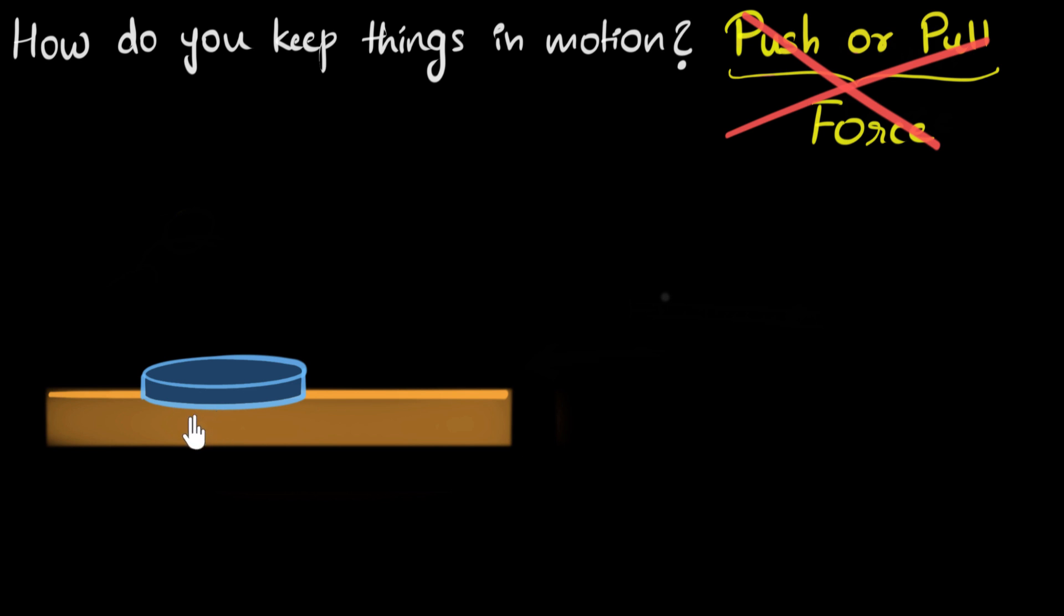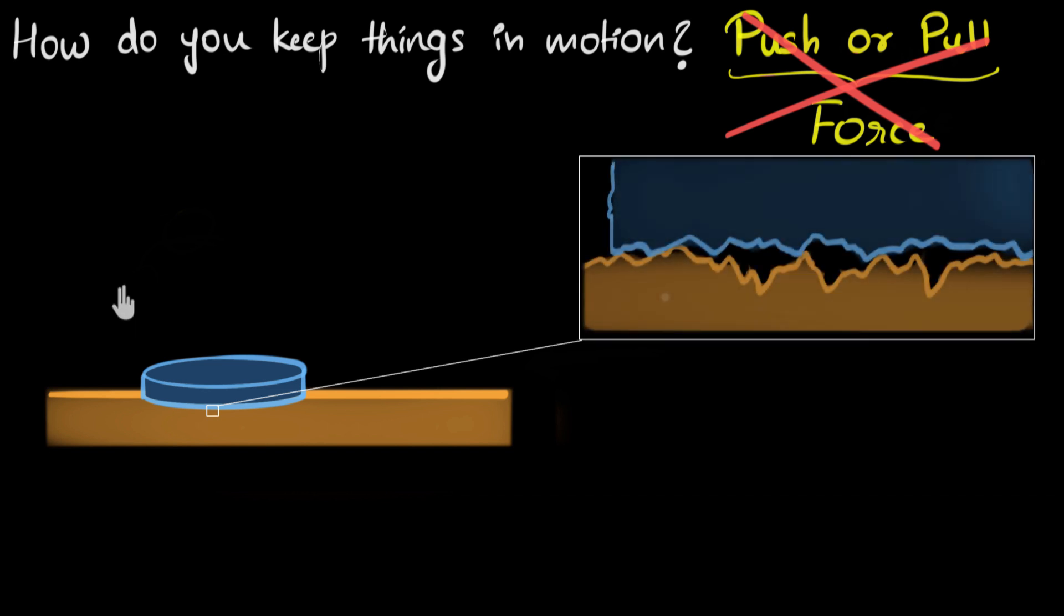So if we could zoom in over here, the surfaces might look somewhat like this. These mountains and valleys are just too small for our eyes to make out. And therefore it looks smooth to us.